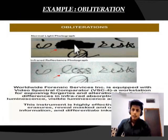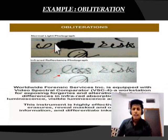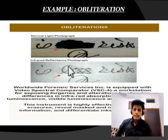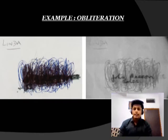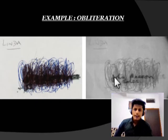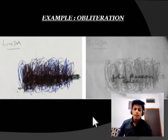This is an example of obliteration in which one word is obliterated very well, but we can find out what it was. Through analysis we can find out that it is less risky to detect. In this last obliteration example, we have the original writing, and it was obliterated — but we found the original content with the help of infrared radiation.